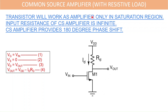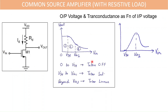Now moving to the common source amplifier, which we will also simulate using Cadence Virtuoso. The input of the common source amplifier is at the gate terminal, the output is taken from the drain terminal, and the source terminal is grounded. The common source amplifier provides 180 degree phase shift between input and output, and input resistance is infinite. VG equals VIN because VS equals 0, VD equals VOUT, so VDS equals VOUT, and VOUT equals VDD minus ID times RD.